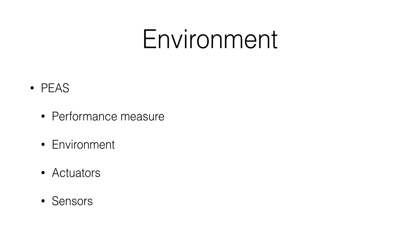Norvig and Russell use what they call the PEAS description to characterize task environments. PEAS stands for Performance measure, Environment, Actuators, and Sensors. The performance measure represents the goal of the task — what criteria will indicate that we are successfully accomplishing it. In the thermostat example, one possible performance measure is the comfort of the people living in the house. The environment refers to the actual setting the agent has to operate in — for example, a thermostat operating in a house in Blacksburg in the Appalachian Mountains, so it gets cold and it's at high altitude.